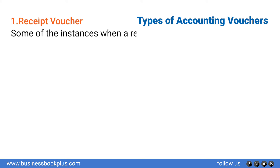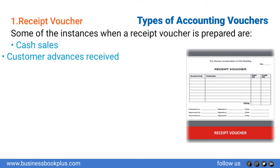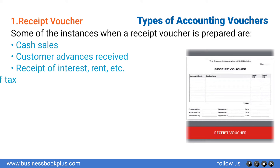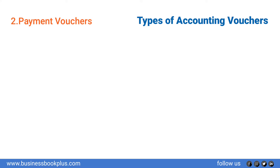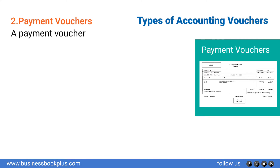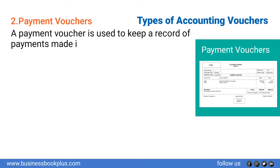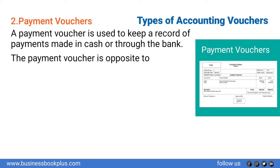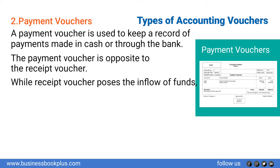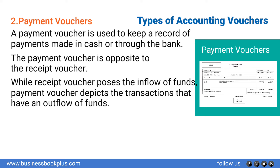Some of the instances when a receipt voucher is prepared are: cash sales, customer advances received, receipt of interest and rent, and refund of tax. Number two: Payment Voucher. A payment voucher is used to keep a record of payments made in cash or through the bank. The payment voucher is opposite to the receipt voucher — while a receipt voucher records the inflow of funds, a payment voucher depicts transactions that have an outflow of funds.